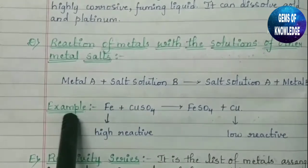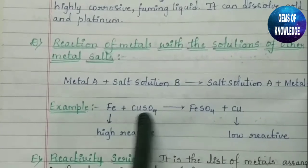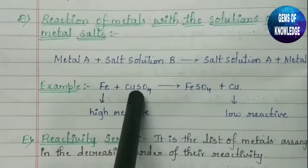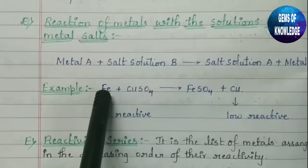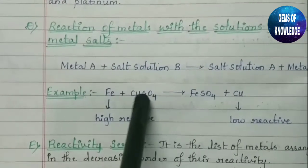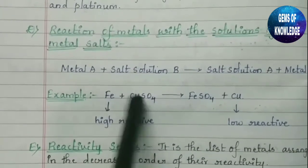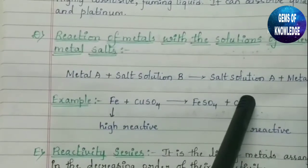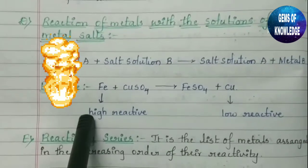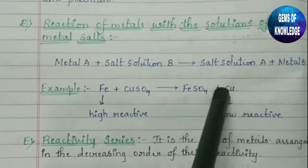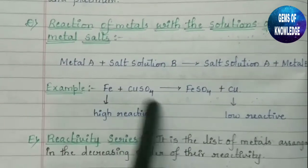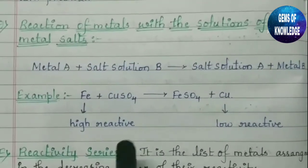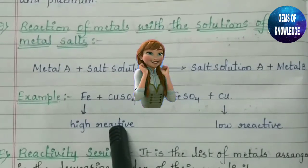For example: Fe plus CuSO4. Fe is iron and CuSO4 is copper sulfate. When these two are mixed, iron combines with SO4 and we get FeSO4, and copper is left freely. This happens because iron is more reactive than copper. Copper is a low reactive metal whereas iron is a high reactive metal. We will learn more about why this happens further.